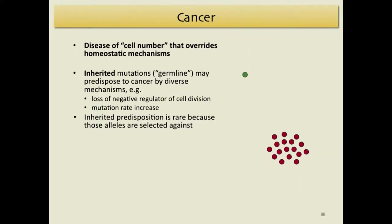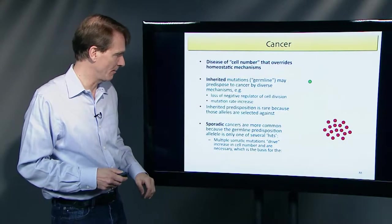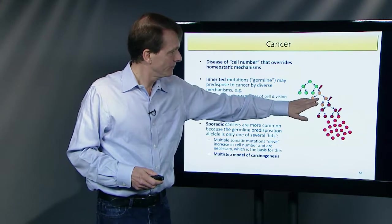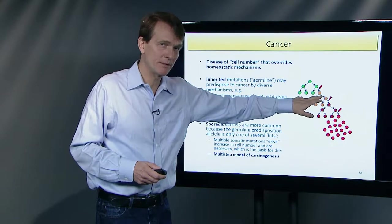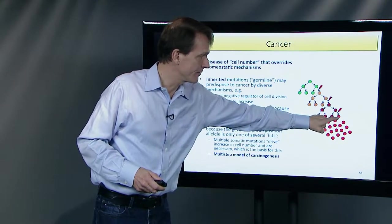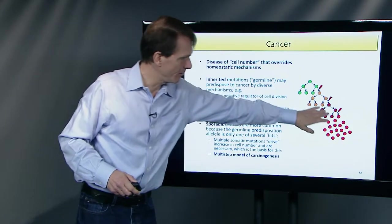Sporadic cancers are more common than inherited ones, because inherited predisposition alleles are rare — the germline predisposition is only one of several hits. If you require 10 hits and the inherited predisposition only gives you one of them, somatic mutation still needs to drive the increase in cell number. That's the basis for the multi-step model of carcinogenesis: a mutation happens, the cell becomes a little more proliferative, more mutations accumulate, until the final mutation takes the brakes off completely and proliferation begins.